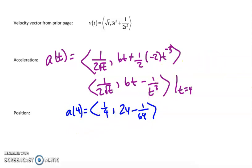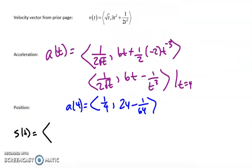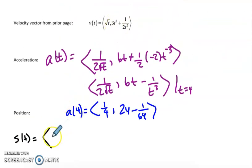Now position requires me to integrate, and so what I do to integrate is I get position by integrating each component separately. So the first component was the square root of t. When I integrate that, I get 2/3 t^(3/2) plus a c₁ value, because remember, we're going to have a different constant of integration for each component.